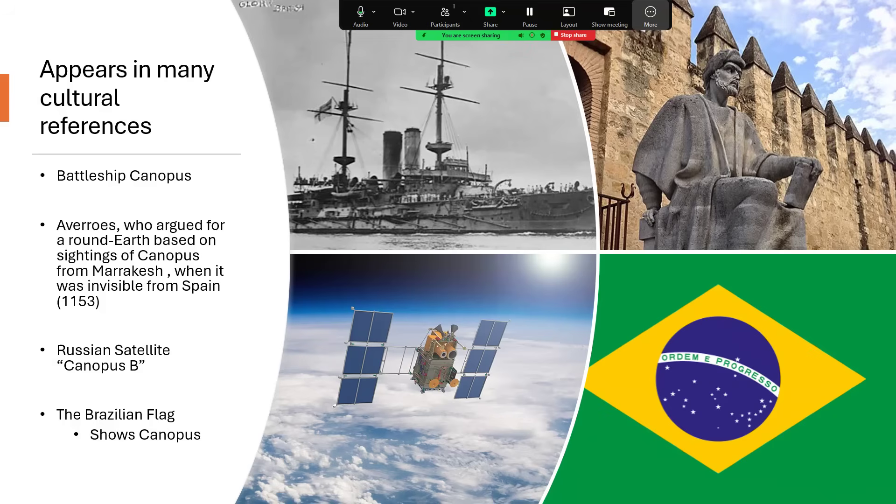The picture at the bottom left, that's a Russian satellite called Canopus B, which orbits the Earth, taking lots of photographs. And on the right, we have the Brazilian flag, which shows Canopus very prominently, as one of the many stars that are illustrated in that central blue circle of the flag there.